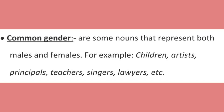Common gender. Common gender nouns represent both males and females. For example: children, artists, principals, teachers, singers, lawyers, etc. Common gender means it represents both — it may be female or male. For example, a doctor or teacher can be male or female. So it represents both people, and it is known as a common gender noun.